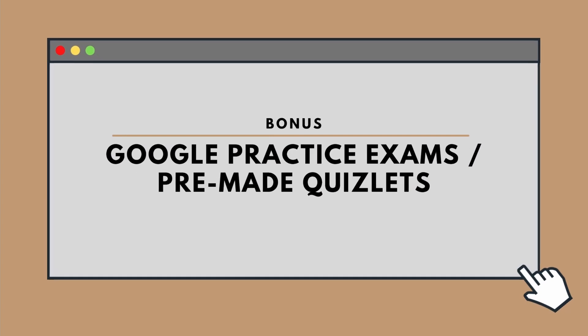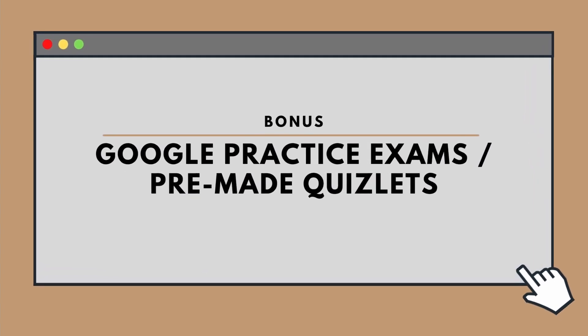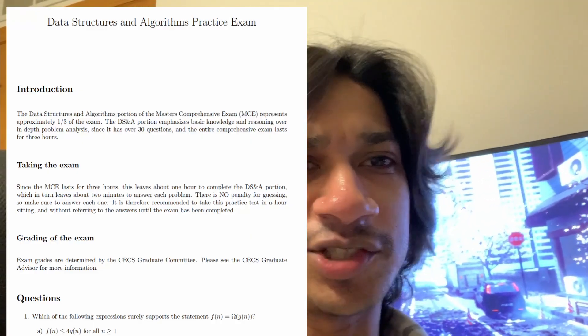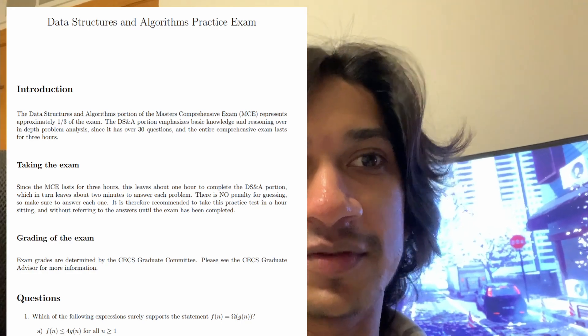One more bonus tip: look up practice exams on Google. I found a bunch from different universities on data structures and algorithms that include answer keys and show what topics are covered. They're pretty old, but comparing them to what I had in my classes, they seem quite relevant for general practice. If you want to do well on your midterm or final, go ahead and look those up.